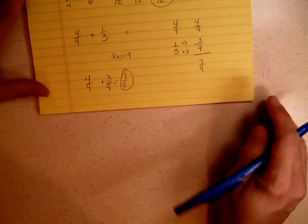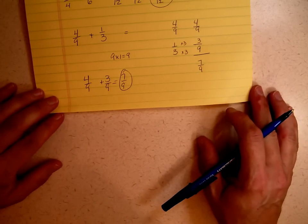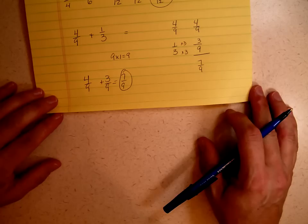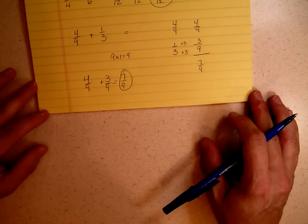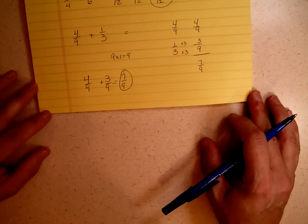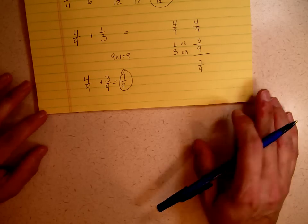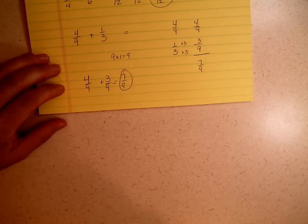And that's how to add fractions using the traditional algorithm. That's the one your mom and dad learned. That's the one they can probably help you the most with. Please check out my video on adding and subtracting fractions with unlike denominators using the alternate algorithm because you may find that a little bit easier to use than the traditional. Although your parents may not, they've been taught this way. That's the way they're going to go back to. Have a good day.